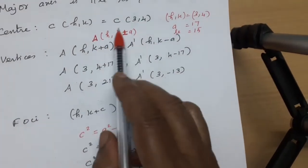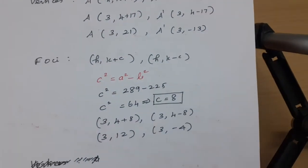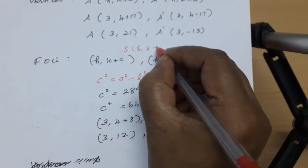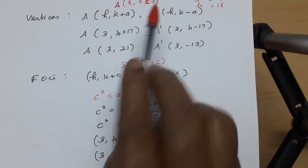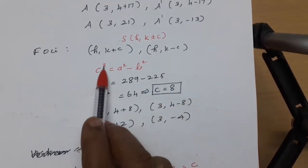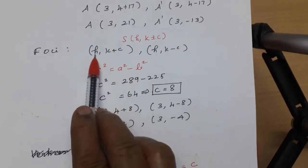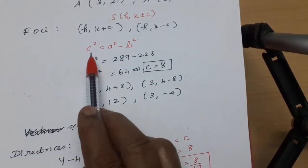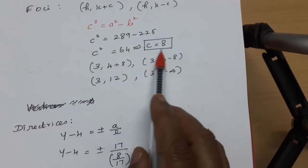For the foci, since the major axis is along Y axis, the foci are at h comma k plus c and h comma k minus c. We find c using c squared equals a squared minus b squared. That is 289 minus 225 equals 64, so c equals 8.